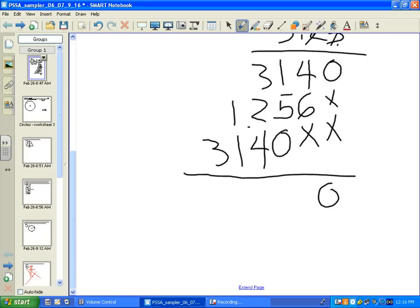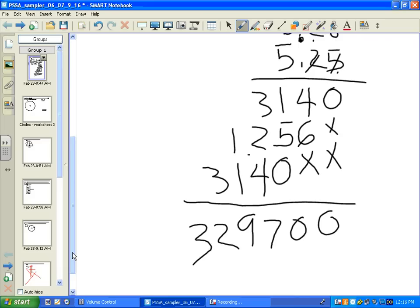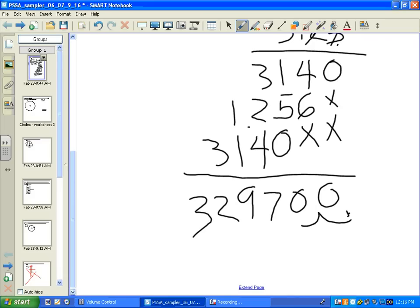I'm going to add these up. 0, 0, 7, 9, 2, 3. Now we have to be careful here because we do have 4 decimal points. We have 6.28 and 5.25. So we have to move our decimal points over from this right here, 1, 2, 3, 4. So our answer is pretty close to 33, but it actually comes right in at 32.97, which is exactly what we calculated, 32.97 inches.